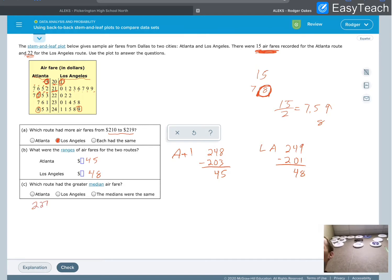I can count backwards. 1, 2, 3, 4, 5, 6, 7, 8. That's 7 in the middle. Now, for Los Angeles, it has 22. If I take 22 and I cut it in half, there's 11 values that are on the left, and there will be 11 values on the right. So we're going to have to go halfway between those two values.